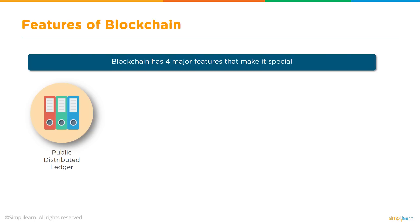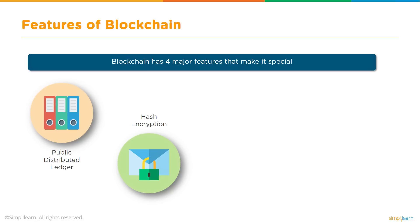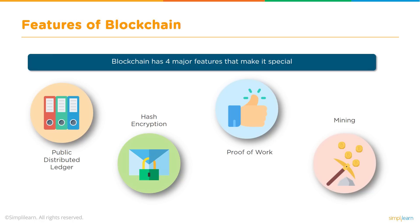What are the typical features of blockchain? Blockchain has four major features that make it special. It is a public distributed ledger. It uses hashing encryption. It uses a proof of work consensus algorithm. And it has entities called miners who are constantly working to maintain the validity of all transactions on the blockchain network to keep the network sanitized.